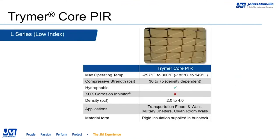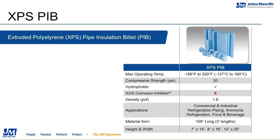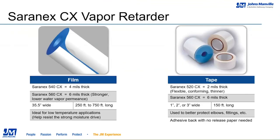The Trimer Core PIR — also known as the L series or low index series — has the same temperature range as the standard Trimer PIR. Compressive strengths range from 30 to 75 PSI based on densities of 2 to 4 lb. Applications include transportation, military shelters, and clean room walls. The L series exists because it is less dusty and has better flexural strength than the standard Trimer PIR products. The XPS PIB (extruded polystyrene billet) is ASTM C578 compliant with a temperature range of -196°F to 320°F, 20 PSI compressive strength, 1.6 lb density, and is often used in food and beverage refrigeration.